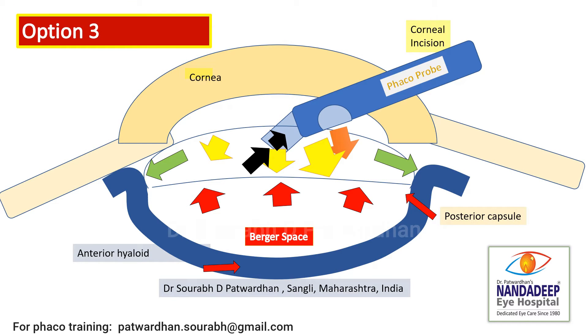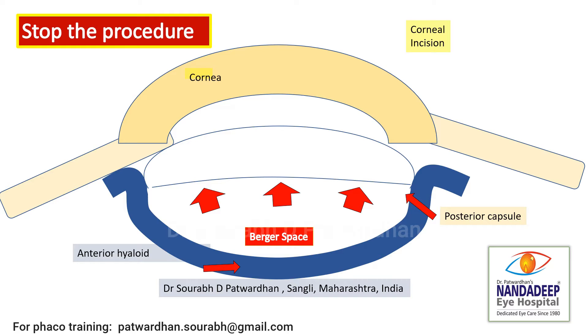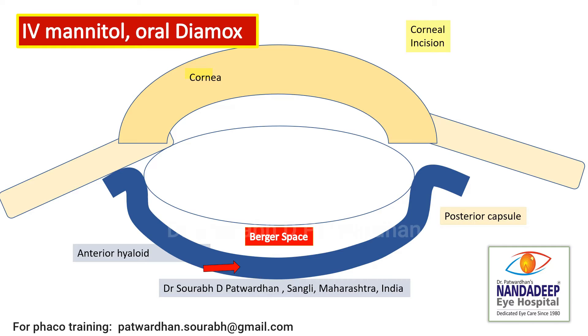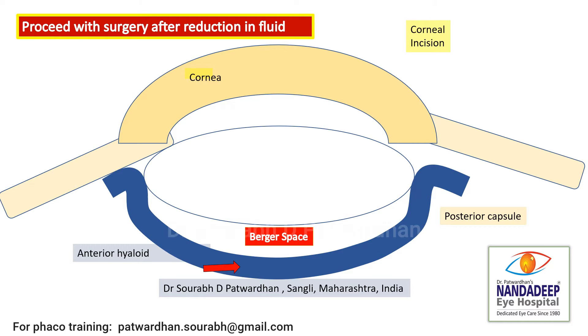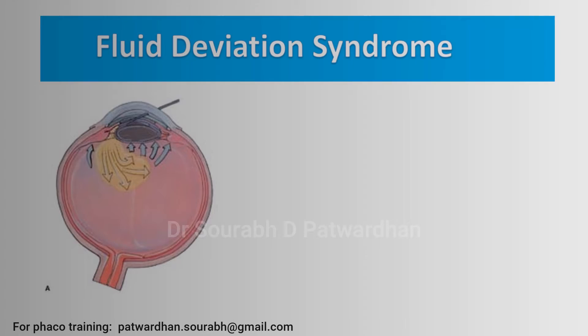But sometimes vitrectomy may lead to suprachoroidal hemorrhage in patients who are prone. The third option, which I would recommend for all beginners and inexperienced surgeons, is to stop the procedure — it is the safest option. Just close the incision, do not try to do any maneuvers. Give the patient IV mannitol and oral acetazolamide to reduce the intraocular pressure. Once the fluid deviation settles down and the AC is deep again, you can proceed with the surgery either on the same day or the next day and perform very safe surgery later.